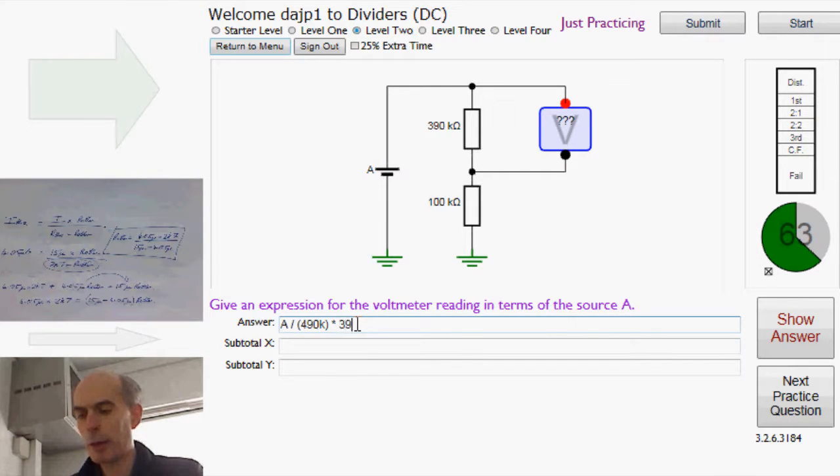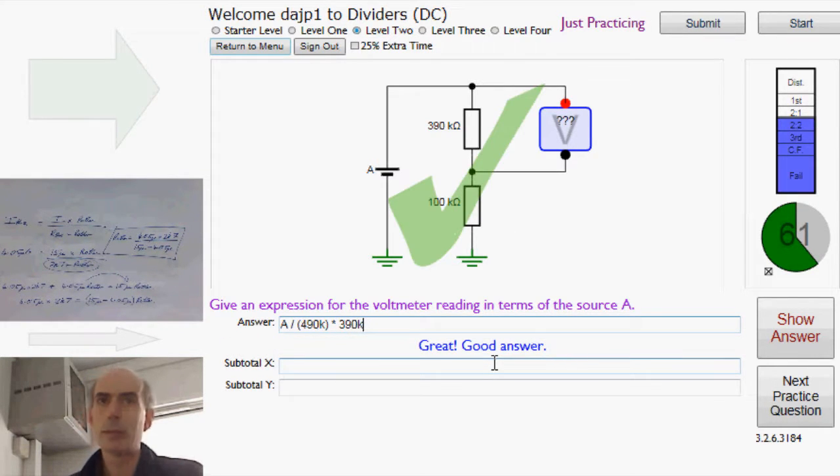So if I multiply it by the value of the resistor, that must give me the voltage across the resistor by Ohm's law. Great. Easier one, that one.